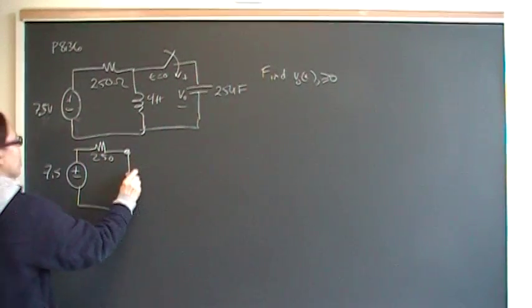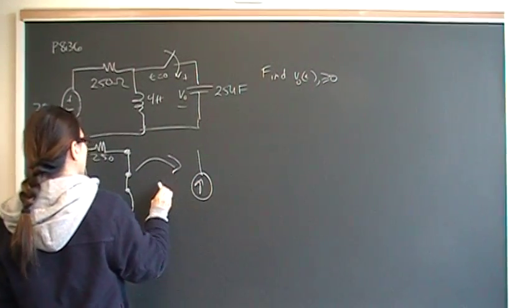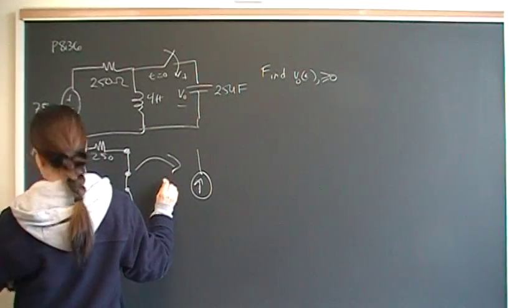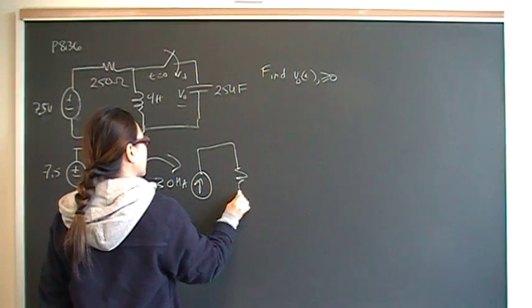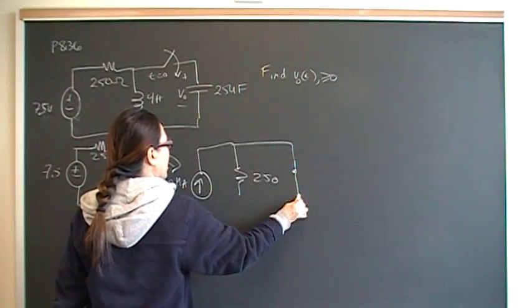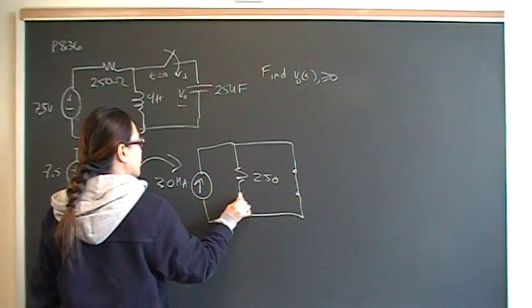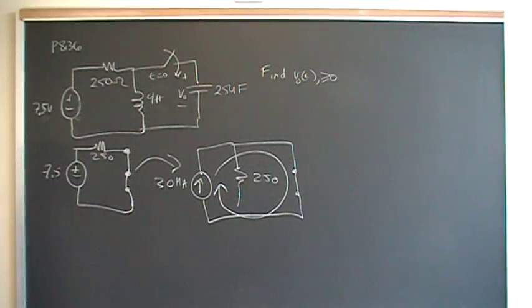What we want to do is do a source transformation and turn this into a current source. My math has this as 30 milliamps in parallel to 250, which is shorted out by this inductor. You have a current that's just going in a loop like that.